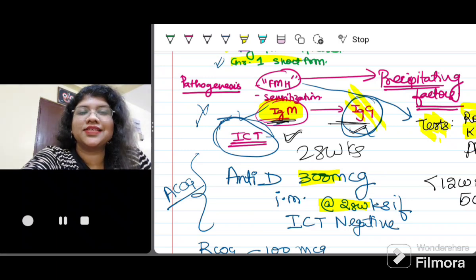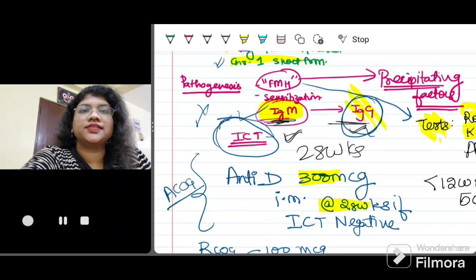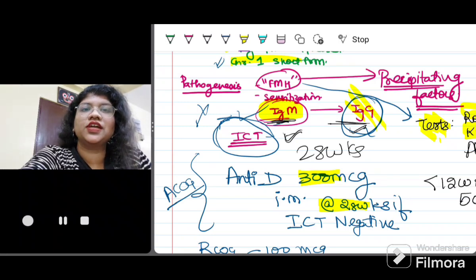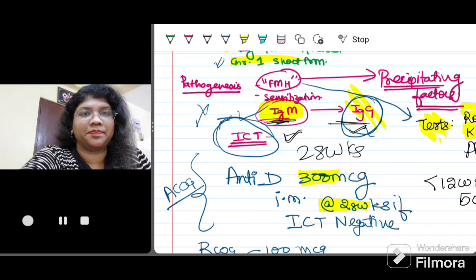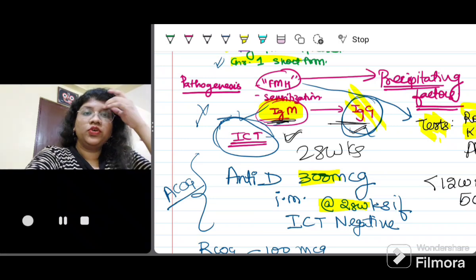So what does ICT mean? It is indirect Coombs test. In this, we are basically testing the maternal serum for the presence of antibodies. So instead of directly checking for the antigens, we are checking for the antibodies and that is why it is known as indirect Coombs test. Remember we are taking the mother's blood sample for this test.